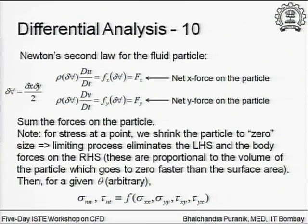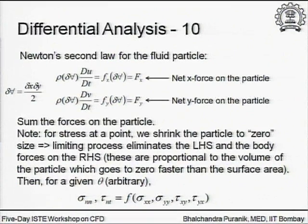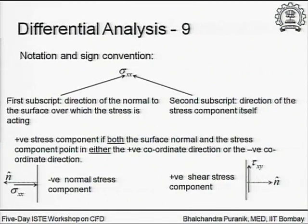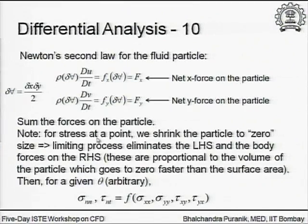This is worth doing as an algebra exercise with that limiting process. Not all books actually have this outlined. It is nicely outlined in Gupta and Gupta, though their element is a reverse triangle — but in principle there is nothing different. All you need to do is sum the forces and take the limit as delta x, delta y, and hence delta s tend to zero.